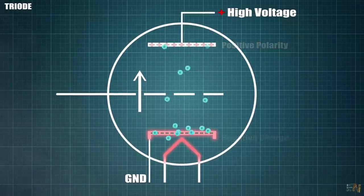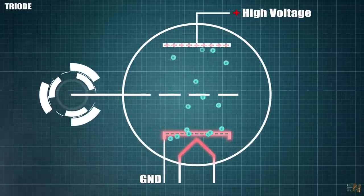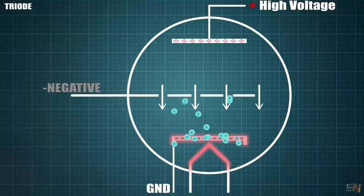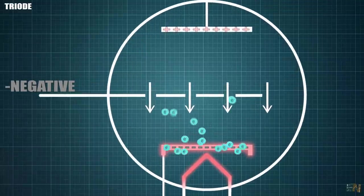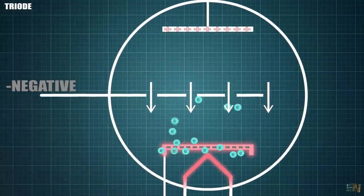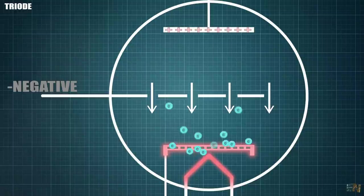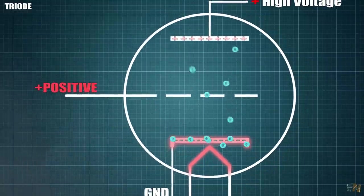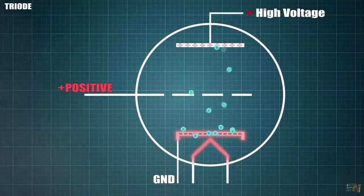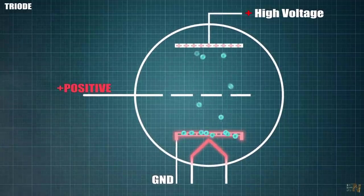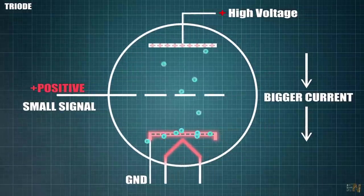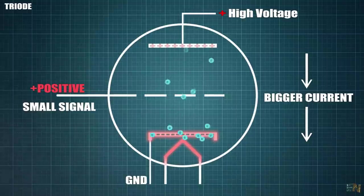But that's why we have this control grid. If we apply a negative signal to this grid, this negative polarity will repel the electrons in the other direction, so the current flow will get smaller and smaller or near to zero. But when we apply a positive, the electrons could flow towards the metal plate above. So this is actually an amplifier because with a small signal applied to the control grid, we can have a bigger current between the cathode and the plate above.